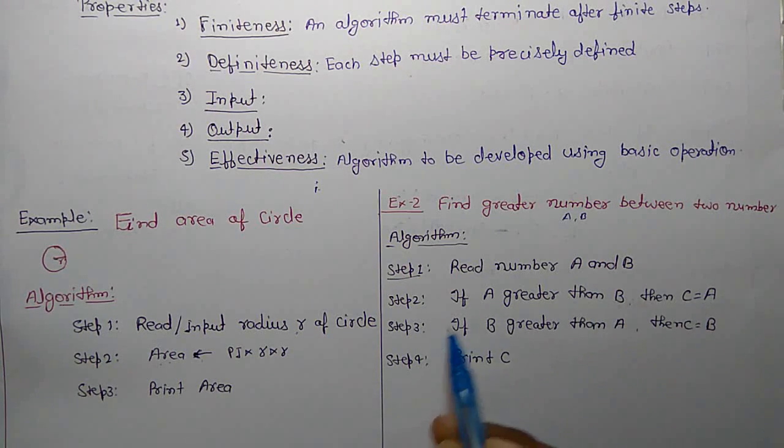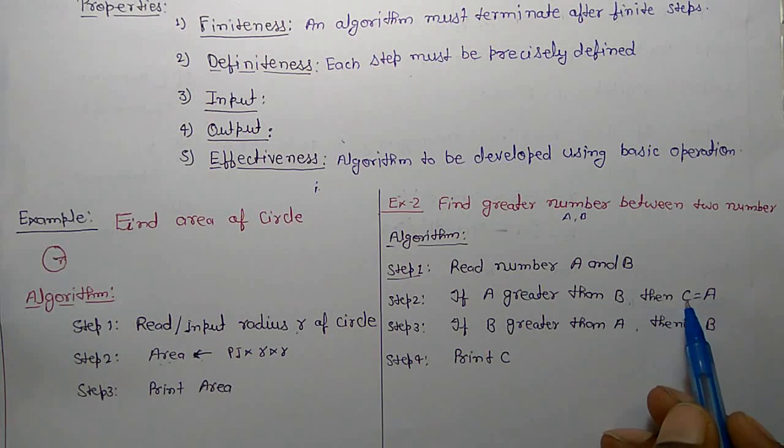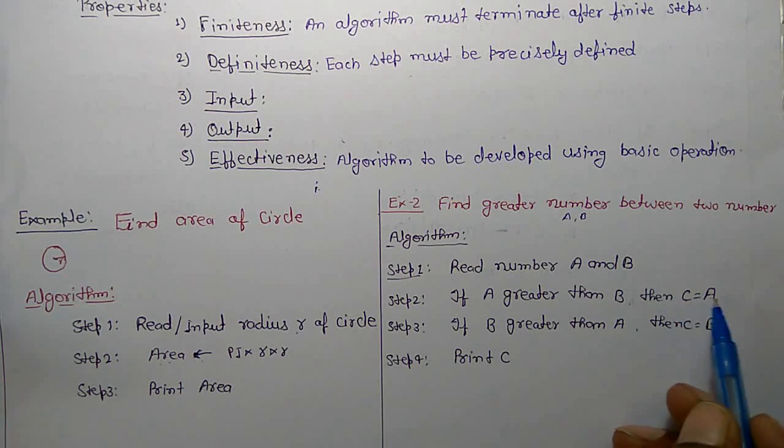If A is greater than B, second step, then C is a variable that holds the greater value, C equals A.